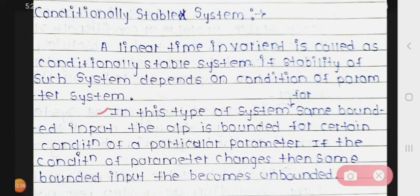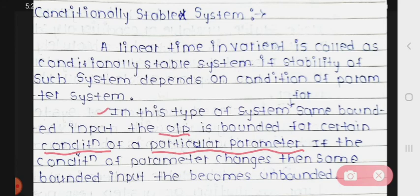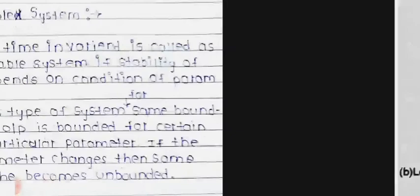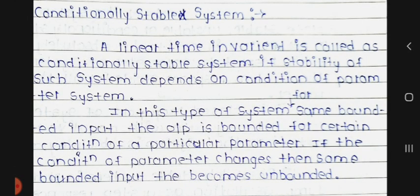In this type of system, for the same bounded input, the output is bounded only for a certain condition — meaning the output is bounded for a particular parameter value. If the condition of the parameter changes, then some bounded input becomes unbounded. So the two types of stable systems are: the critically or marginally stable system, and the conditionally stable system.